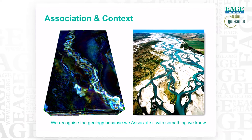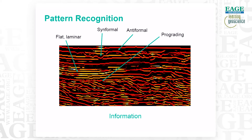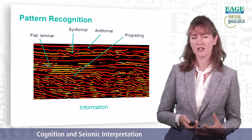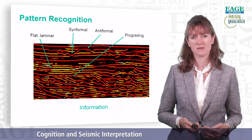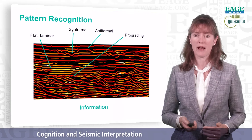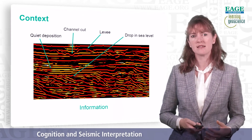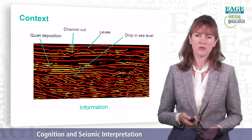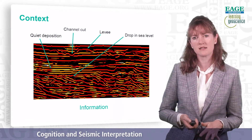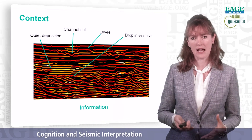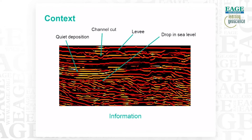Knowing which information to access is part of understanding the context of something. Going back to our seismic image, where we've already transferred the data into information using pattern recognition, we can take that one step further and put it into context to apply more association. The context here is that this image is a vertical section through some seismic data, and those lines represent reflection boundaries. Now we can associate the shapes with geological features — flat laminar areas are quiet deposition, antiformal areas are levees, synformal areas are channel cuts, and prograding features indicate a drop in sea level.